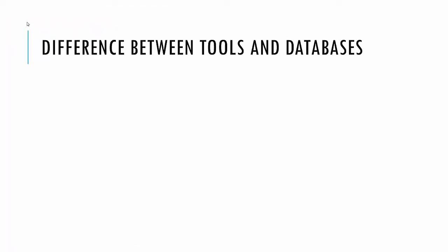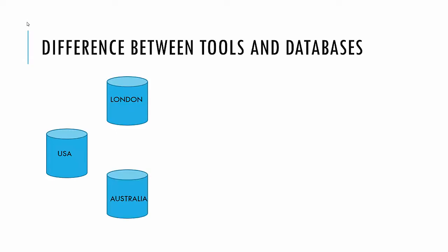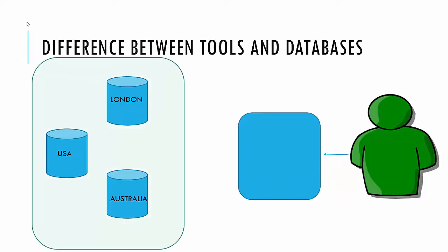Let's say you have a database in London, another in the USA, and another in Australia. You could connect to these databases and pass queries via text or command line, but a simpler way is to use a tool. Microsoft, when you install the database engine, gives you an option to install a tool called SQL Server Management Studio. In Management Studio, you just provide a connection string - the address of the London database or the USA database - connect to it, and directly interact with the database right from the tool. This really speeds up your querying effort.